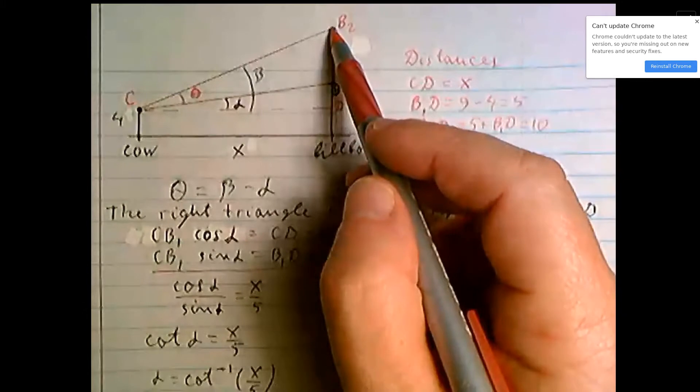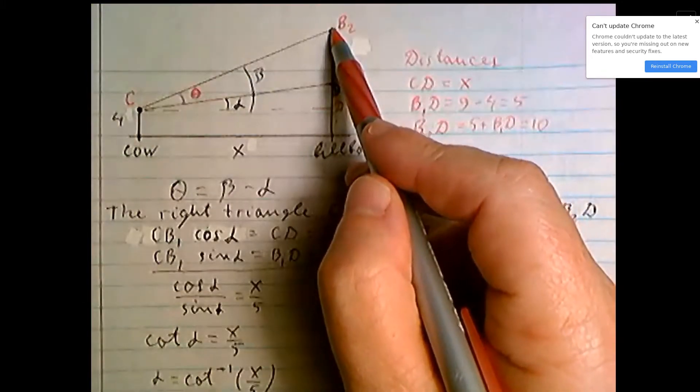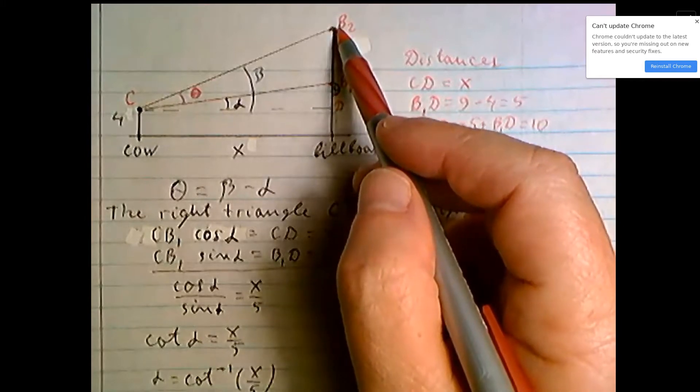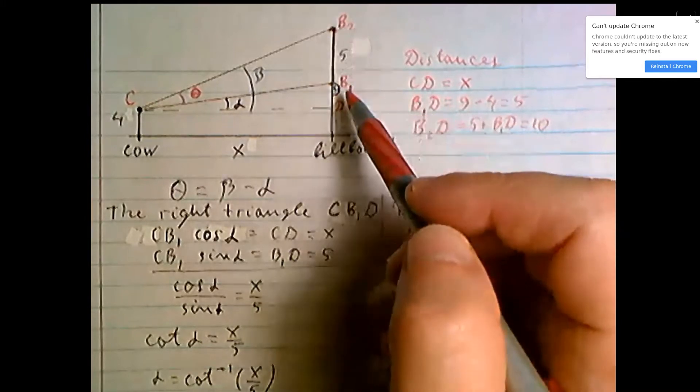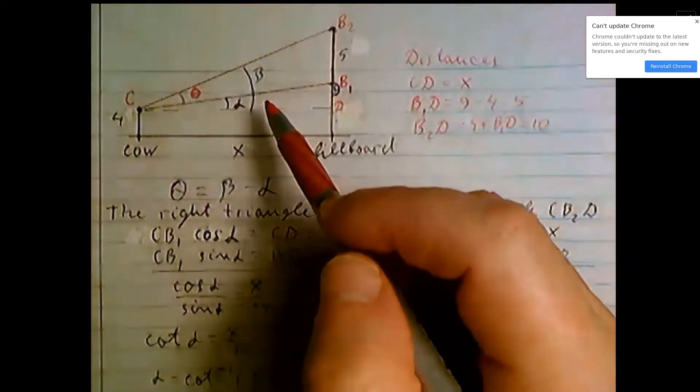So what is the angle theta if the cow looks at the angle between this and P2, the top point of billboard, and P1, the bottom point of billboard? This angle theta.